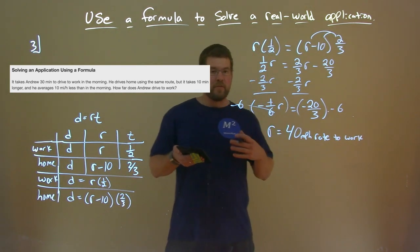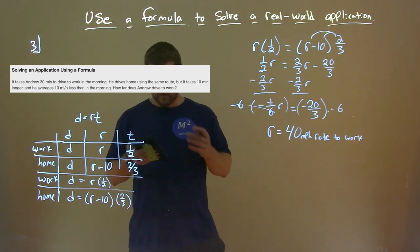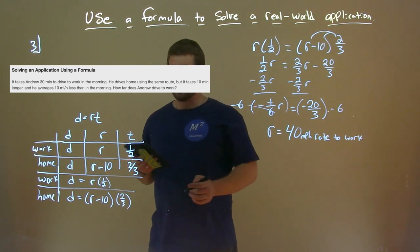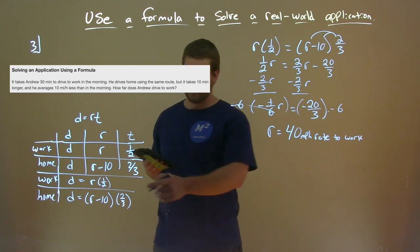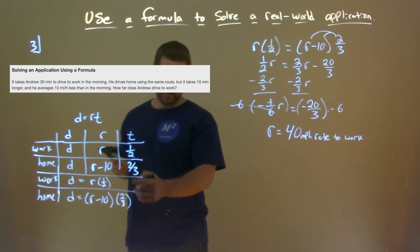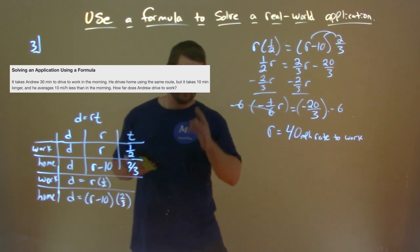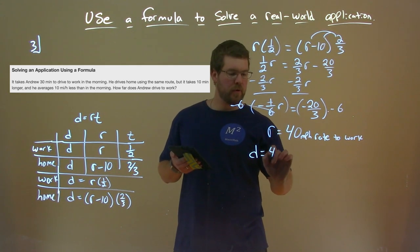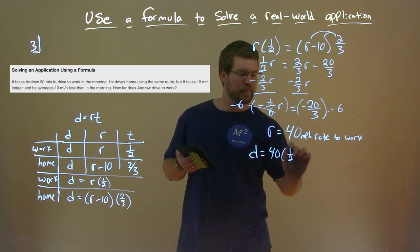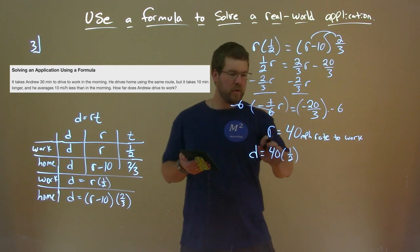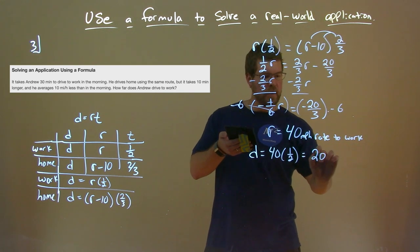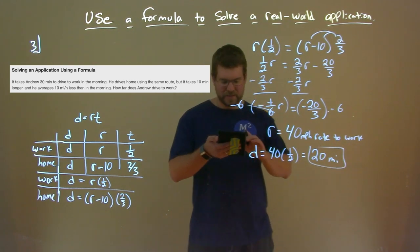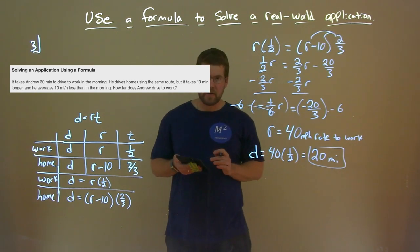Now we want to find the distance. The easier of the two formulas is D equals R times one-half — the trip to work. We can plug in R equals 40: distance equals 40 times one-half. 40 times one-half is 20. So his distance to work is 20 miles.